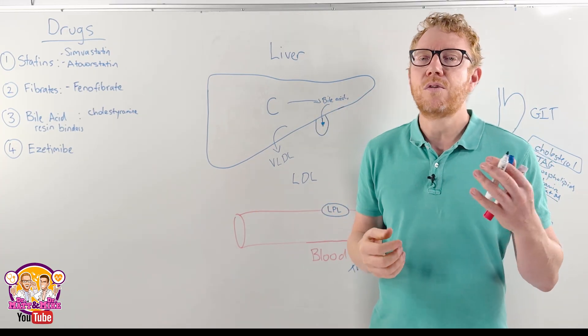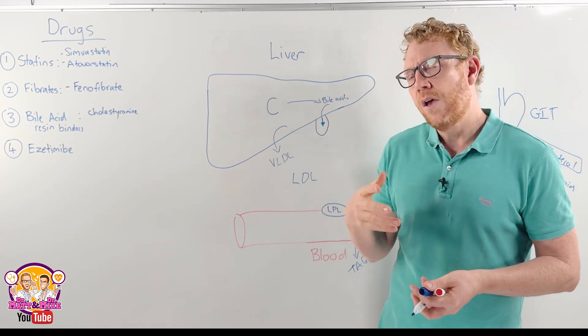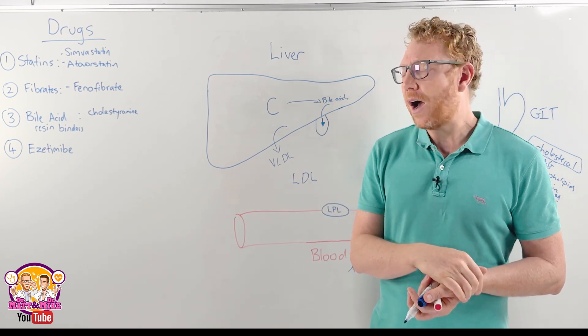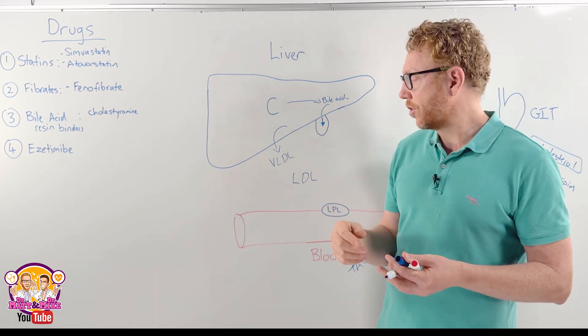So it can go to the skin to help produce vitamin D, it can go to the adrenal glands or the gonads to produce steroid hormones, or it can go to nerves or Schwann cells to help create myelin.